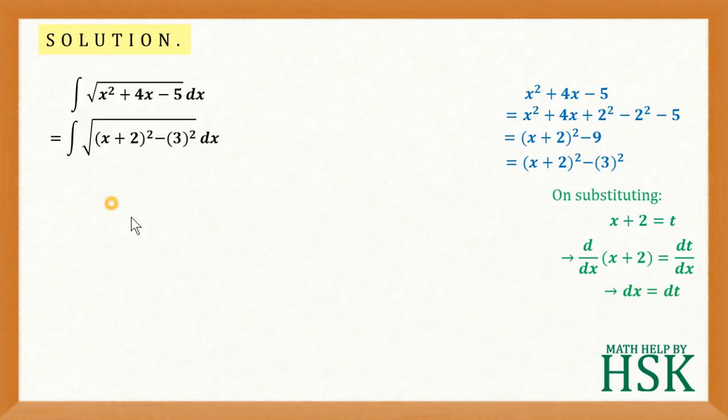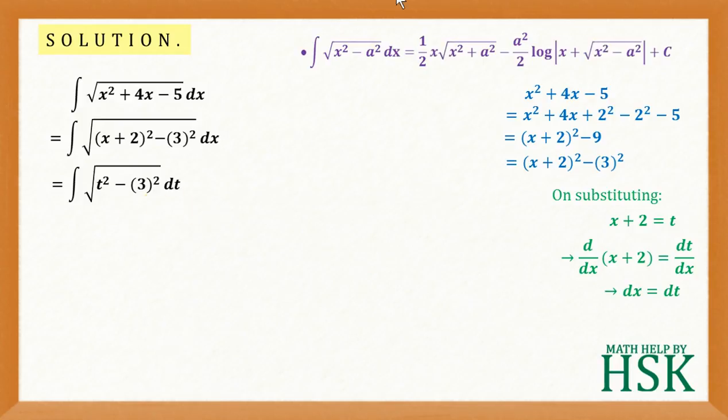So this integral is going to become integration of square root of t square minus 3 square dt. Now I am going to apply this formula of integration of x square minus a square dx is equal to 1 by 2 times x into square root of x square minus a square minus a square upon 2 log of x plus square root of x square minus a square plus c.